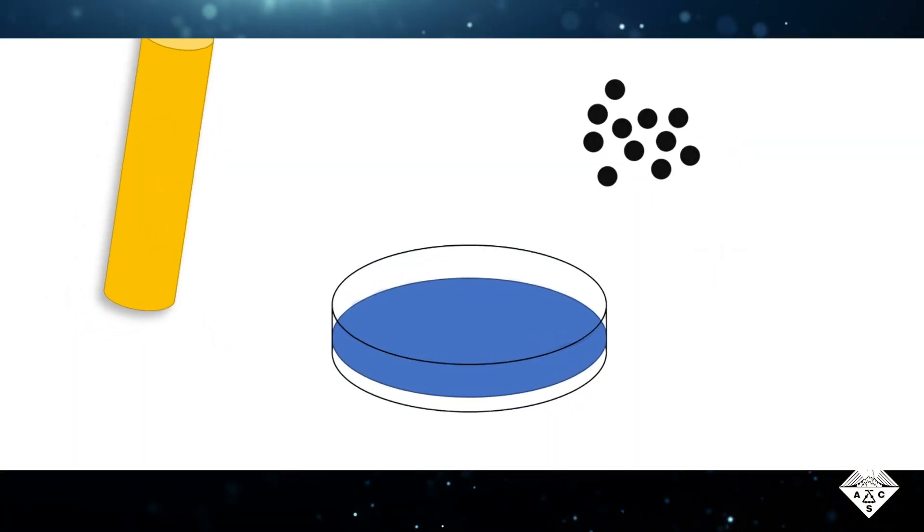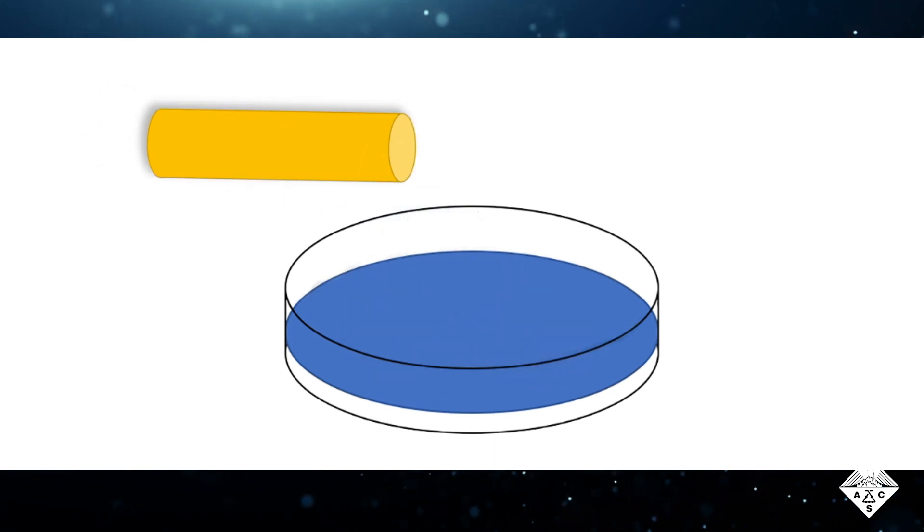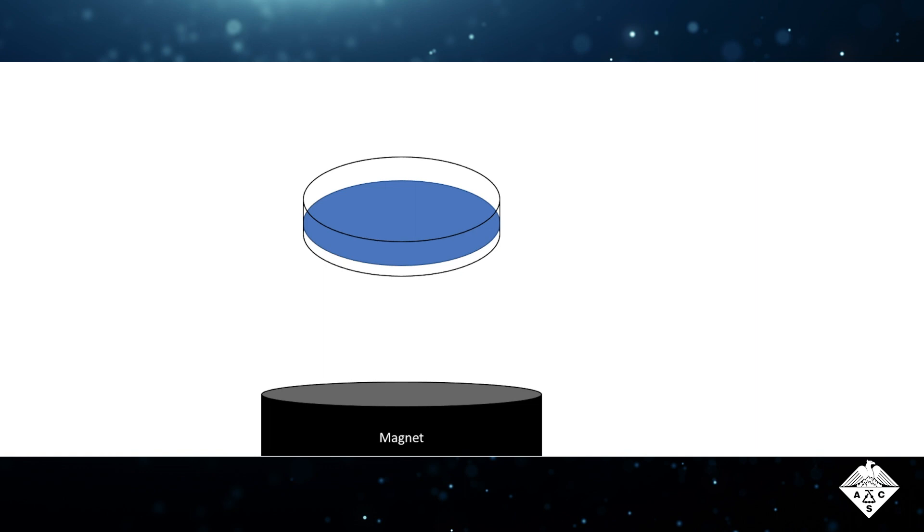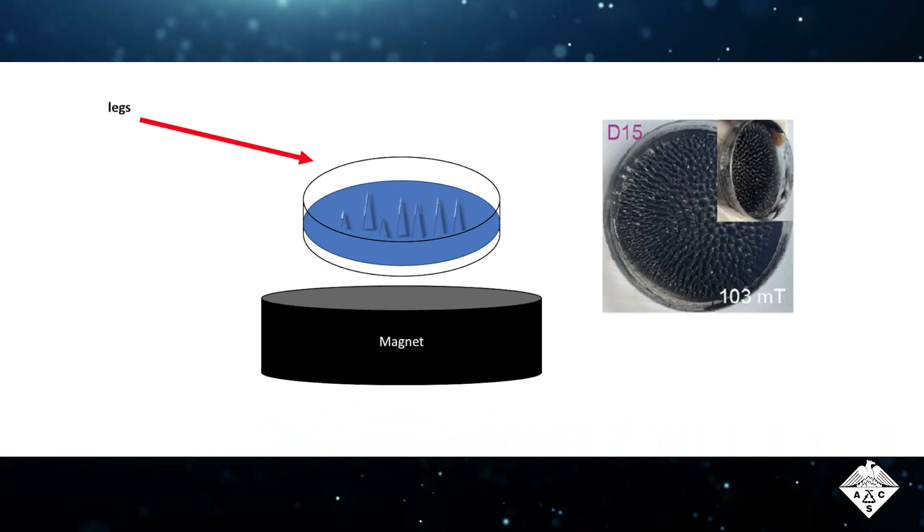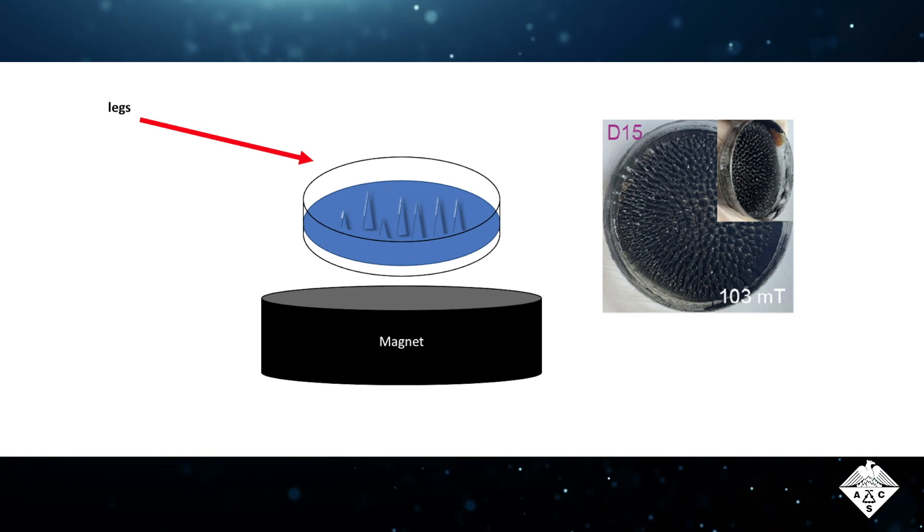As a first step, the researchers made a hydrogel out of a squishy gelatin solution mixed with magnetic iron oxide microparticles. Placing the material above a permanent magnet caused the microparticles in the solution to push the gel outward, forming insect-like legs along the lines of the magnetic field.